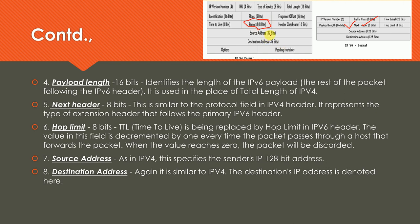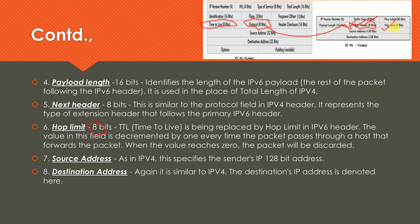Next Header is an 8-bit field, similar to the Protocol field in IPv4. It represents the type of extension headers that follow in IPv6. Then there is Hop Limit, also 8 bits — equivalent to TTL (Time to Live) in IPv4. A value is placed there and decremented at each hop; once it reaches zero, the packet is discarded. The concept is the same as TTL — it decides the lifetime of the packet in the network. Source and destination addresses are both 128 bits each.